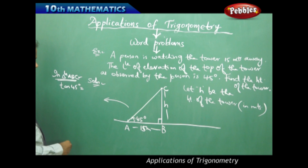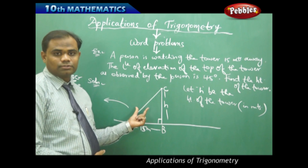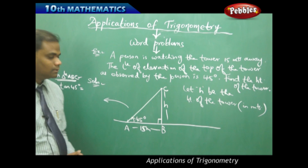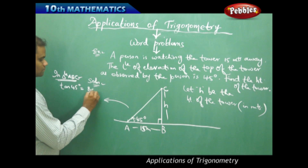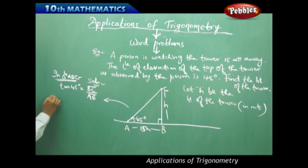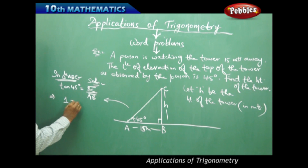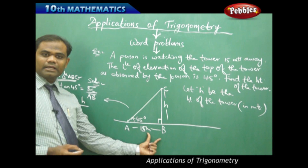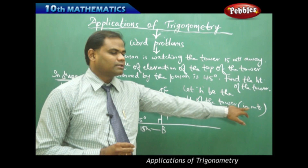To find the height of the tower, I take tan 45 in triangle ABC, since connecting the opposite side with the adjacent side is what's needed — the hypotenuse is of no use here. Tan theta equals opposite over adjacent. From the trigonometric table for special angles, tan 45 equals 1, BC equals H, and AB equals 15 meters. On cross multiplication, H equals 15 — therefore the height of the tower is 15 meters.